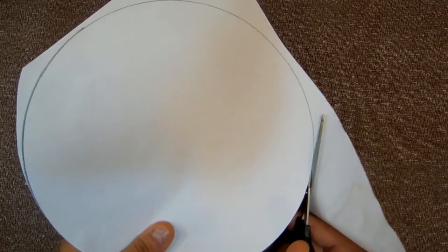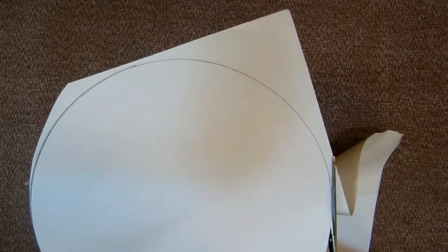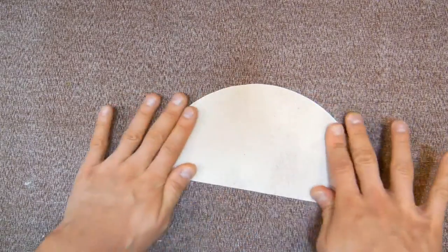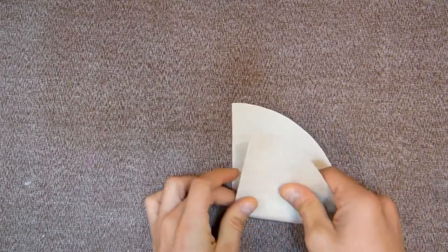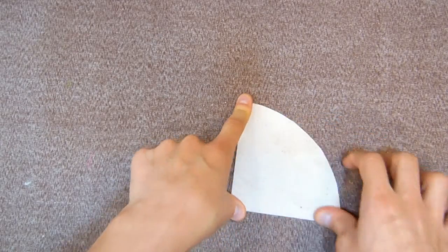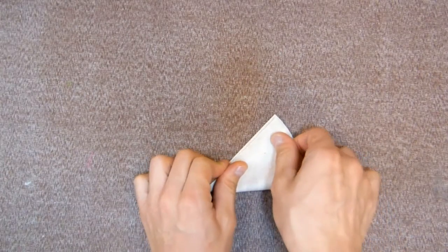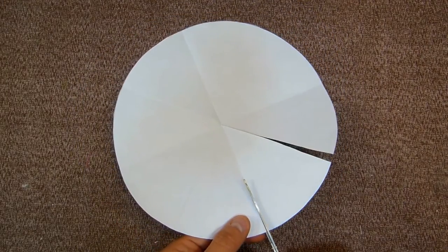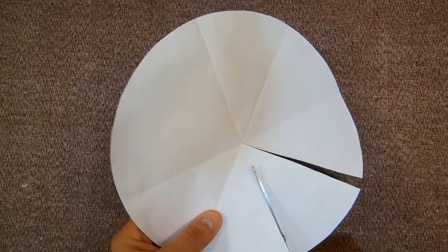Now cut a circle the same size of plain paper. Fold the circle repeatedly into quarters and then unfold the paper. Cut one of the triangles. It will be our template.